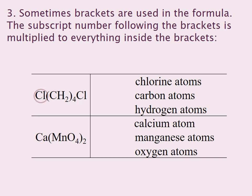I have a Cl and a Cl, giving me a total of 2 chlorines. I have a C, which gives me 1 carbon atom — it is inside brackets, so I have to multiply it by 4, giving me a total of 4 carbon atoms. H: there are 2 of them, and it is also inside brackets, so I have to multiply it by 4, giving me a total of 8 hydrogen atoms.